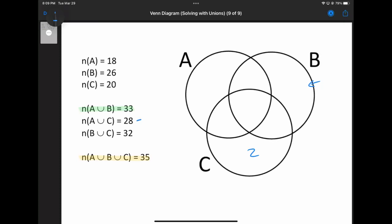So if A union C is 28, and the whole thing is 35, then this part here is the difference between them, 35 minus 28, which is 7. Same logic for the last part for A. We take everything and subtract off B union C, so 35 minus 32 gives us 3.